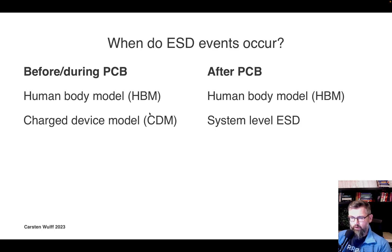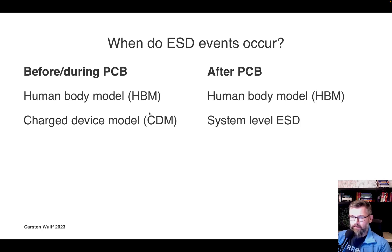Human body model is probably the easiest to understand, and it is also the easiest to deal with as long as you remember to do so on the chip. Charged device model, for complex chips, can be very complex — it is not necessarily easy. It is handled through strategies for how different power mains are separated and connected.